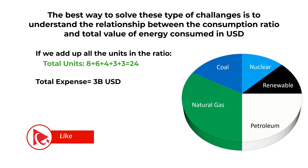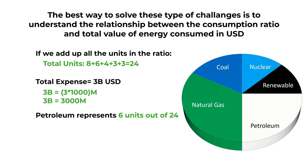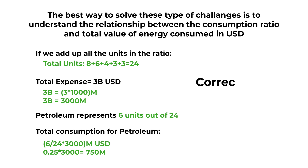Our total consumption expense is 3 billion dollars, but the answers are in millions, so we convert: 3 billion = 3,000 million dollars. Petroleum represents 6 units out of 24, so the total petroleum consumption is calculated as 6 ÷ 24 × 3,000, which equals 0.25 × 3,000 = 750 million dollars.